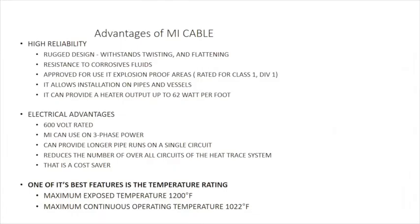Now let's look at the advantages of MI cable. The outer jacket, that metal alloy, is very durable — its rugged design withstands twisting and flattening of the cable. It is also resistant to corrosive fluids and can be located in explosion-proof areas, rated Class 1 Division 1. MI cable can be placed on either pipes or vessels, and when we refer to vessels we're referring to actual tanks. It has a heating output of up to 62 watts per foot.